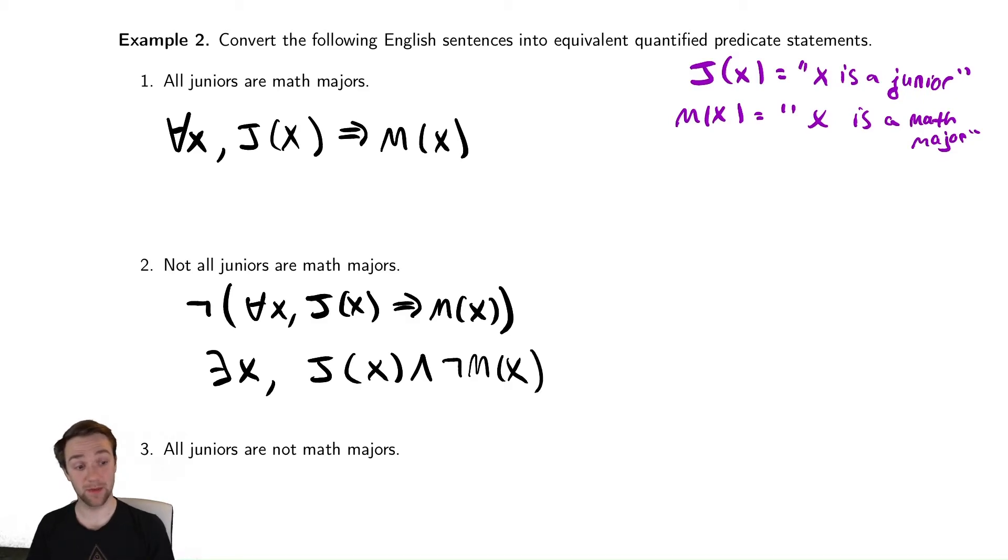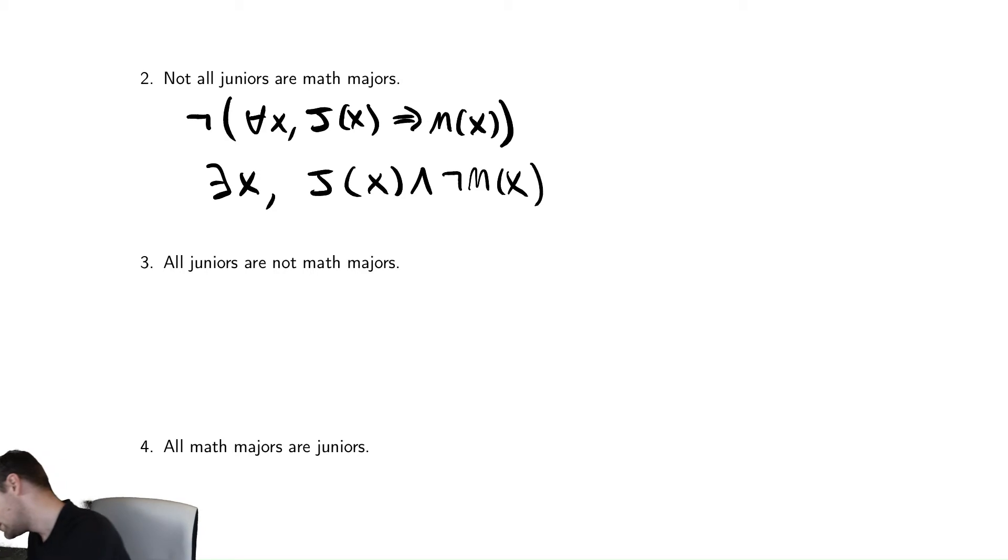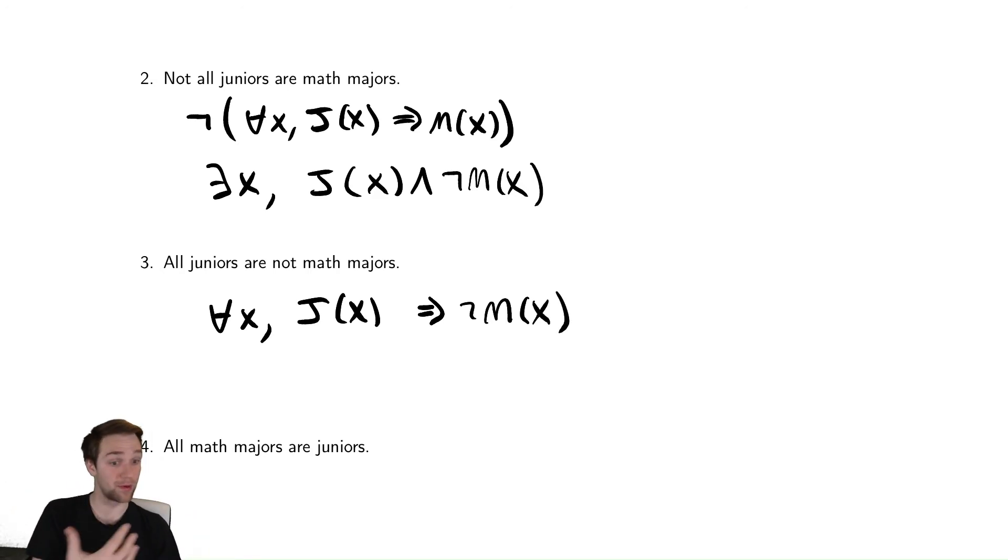Our next thing is going to be all juniors are not math majors. So let's figure out how to write that down. We're going to say for all x, because that's an all, says all juniors are not math majors. That's saying all juniors are not. So that's for all x. If it is a junior, then it is not a math major. So we need to be careful where we put our nots in our sentences. Not all juniors are math majors is different than all juniors are not math majors. The placement of that word not actually affects how we interpret it as a mathematical statement.